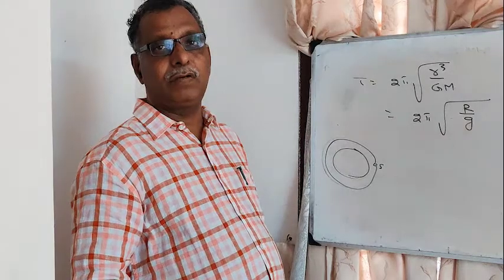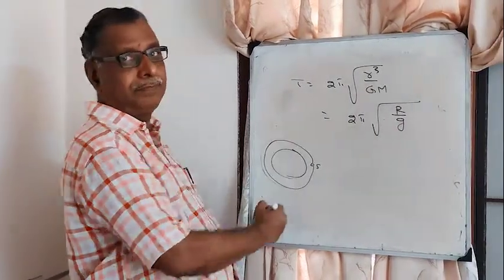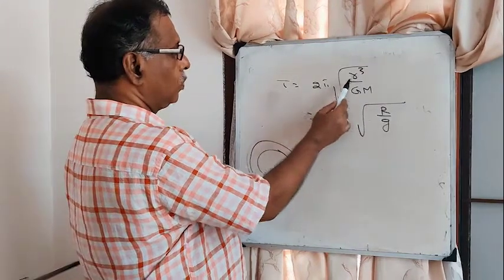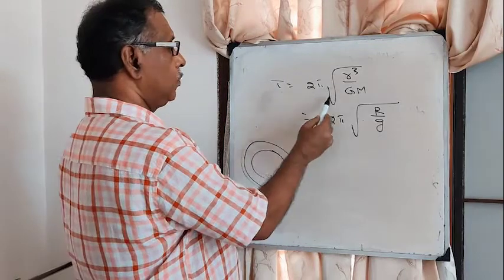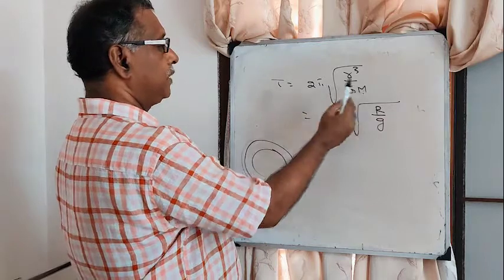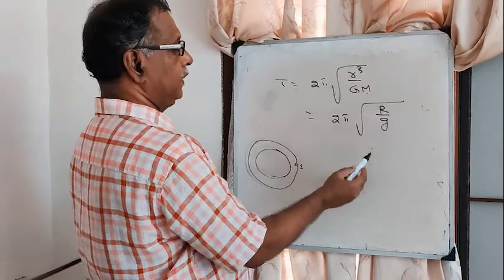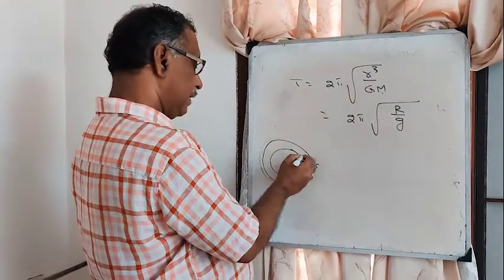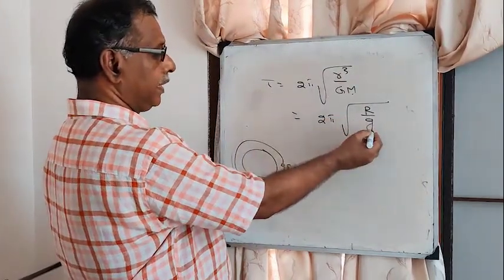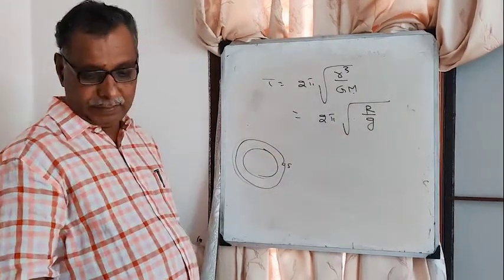The period of a satellite — time taken for one revolution — is T = 2π·√(R³ / G·M), where R is the radius of the orbit and M is the mass of the earth. For a satellite very close to the surface, this approximates to T = 2π·√(R / g).